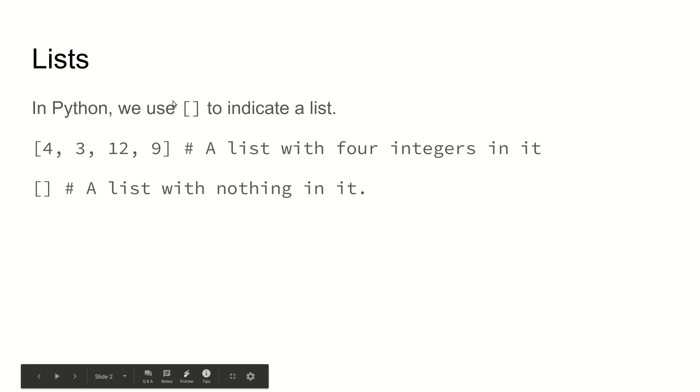For example, square brackets with nothing between them is an empty list, a list that has nothing in it. Whereas this one here has square brackets 4, 3, 12, 9, and that means it creates a list with these four integers in it. You can see that we separate items by commas, and these items could be numbers, they could be strings.